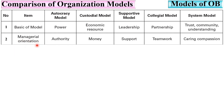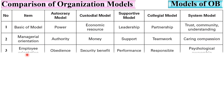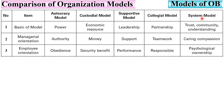Regarding managerial orientation: autocratic model is based on authority; custodial model on money; supportive model on support; collegial model on teamwork; and system model on caring compassion. For employee orientation: autocratic model is obedience; custodial model is security and benefit; supportive model is performance; collegial model is responsibility; and system model is psychological ownership. For employee psychological result: autocratic model depends on the boss; custodial on the organization; supportive on partnership; collegial on self-discipline; and system model on self-motivation.